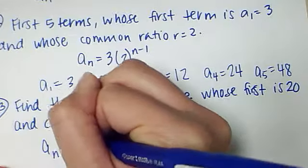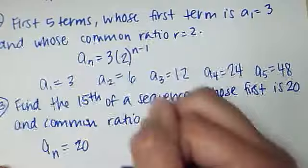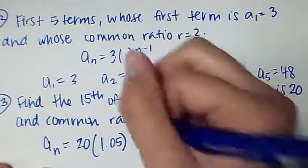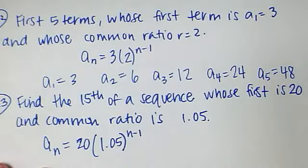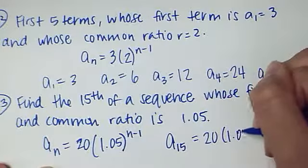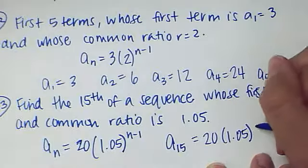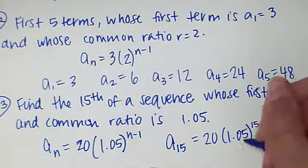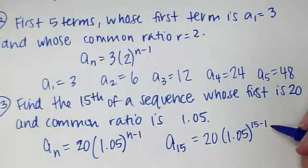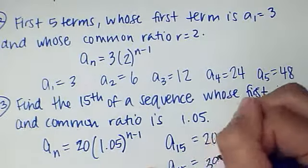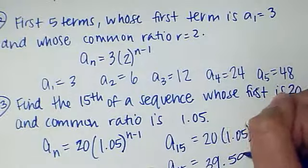A sub n equals first term is 20, times the common ratio, which is 1.05 to the n minus 1. And to find the 15th, I'm simply going to plug in 15 for n. So a sub 15 is 20 times 1.05 to the 15 minus 1, which is to the 14th power. And if I do this part first, 1.05 to the 14th power and then times 20, I get that a15, or the 15th term is 39.599.